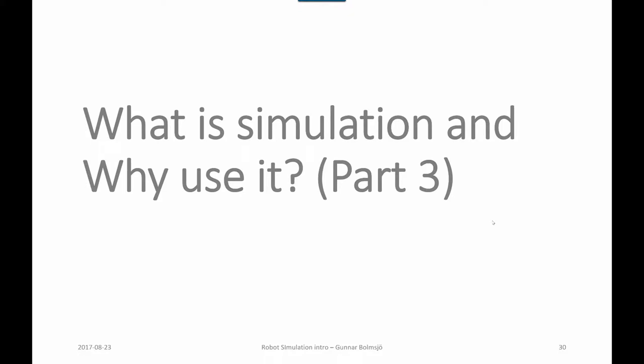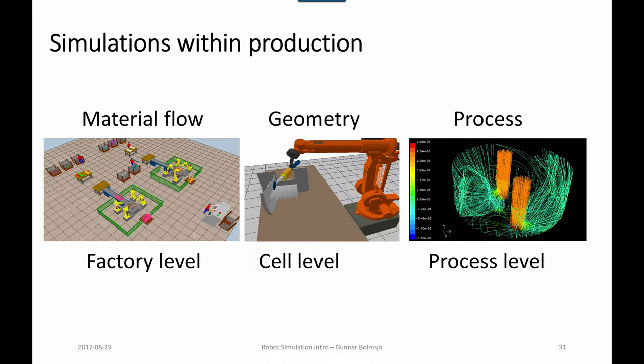So what is simulation and why use it? Part three of the simulation introduction. Simulations within production in general relate to material flow at the factory level, geometry at the cell level, and process at the process level. The process level is usually within the cell level, so we move from the system into the cell.